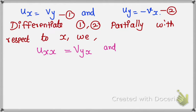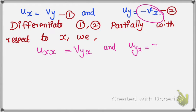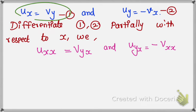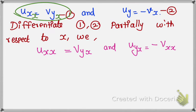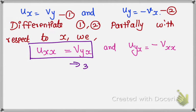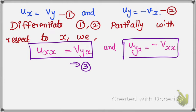Here, Uy partially differentiated with respect to x gives Uyx, and minus Vx differentiated with respect to x gives minus Vxx. So we have equation 3: Uxx equals Vyx, and equation 4: Uyx equals minus Vxx.